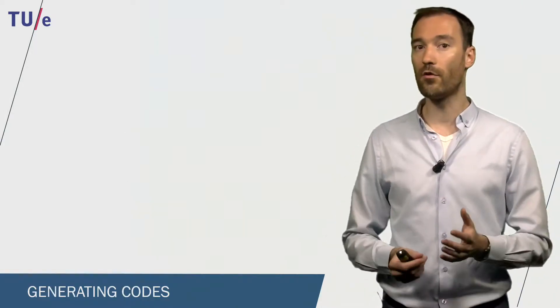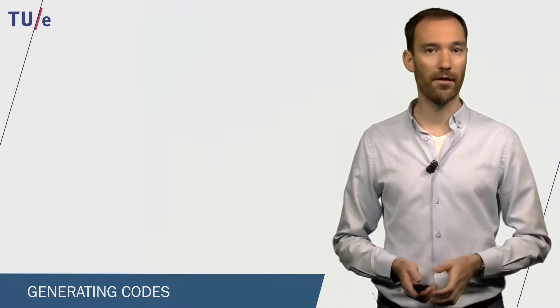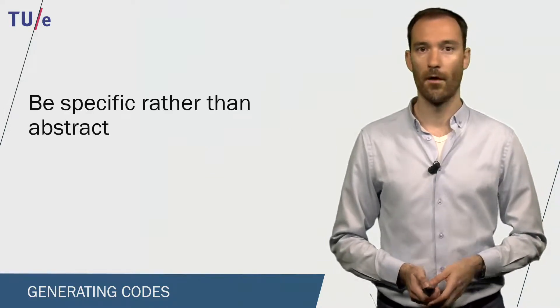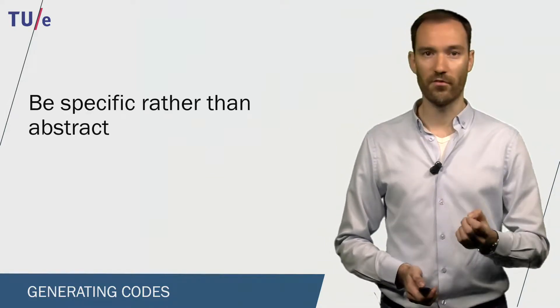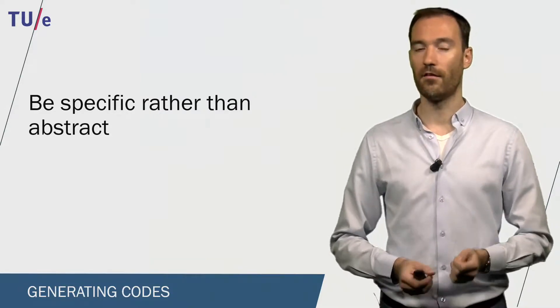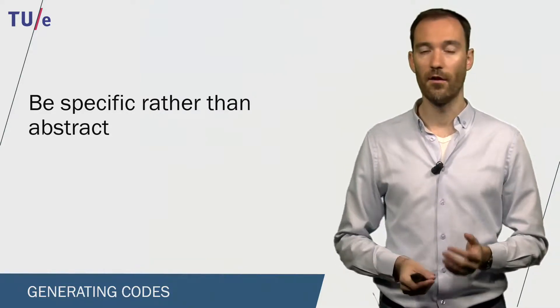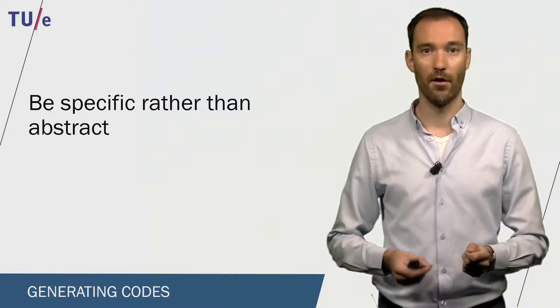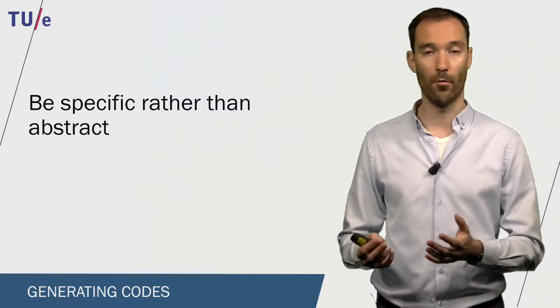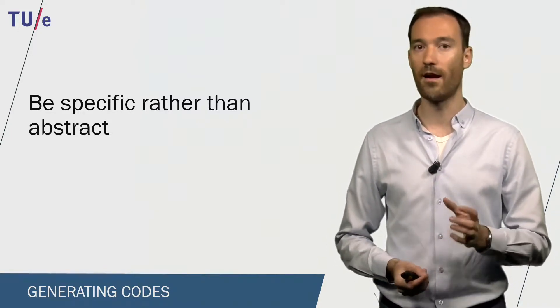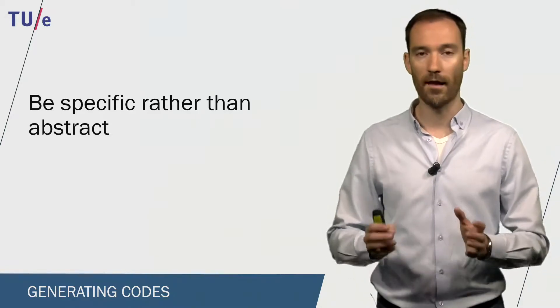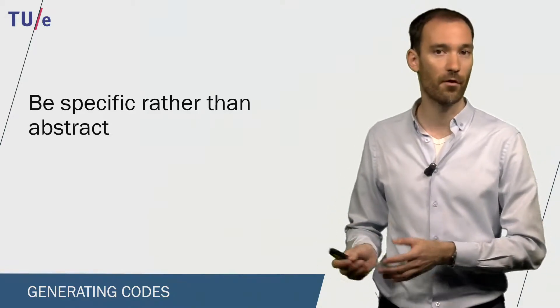When you start coding your data, there are a few important things to take into account. The first one is that you should be specific and not abstract. This means that when you summarize your data, you should make sure that the content is still in there. So when a person gives a positive evaluation or a positive argument, write down the content of that argument, and not just that it is a positive argument.